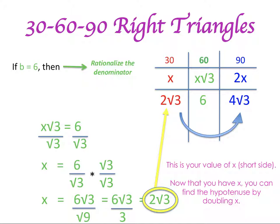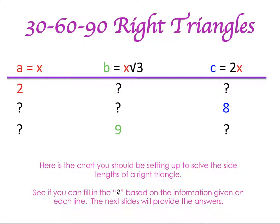This is going to be the most difficult part you'll have to deal with: when you're trying to rationalize the denominator, trying to get that square root out of the denominator. Here I have a couple of charts set up where I gave you some information. In the first line I gave you the short side; in the second line, the hypotenuse; and in the third line, the long side. What I'd like you to do is take a minute, pause the recording, and see if you can fill those numbers in — I do have the answers for the next couple of slides.